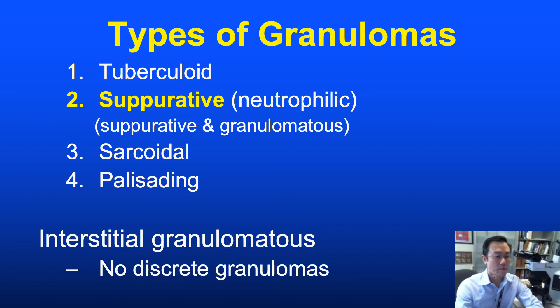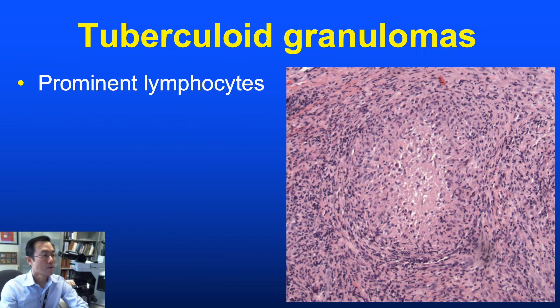A brief clarification: the term 'suppurative' refers to a neutrophilic infiltrate. A typical phrase used to describe these reactions is 'suppurative and granulomatous' or 'neutrophilic and granulomatous' — synonymous terms classified here as the suppurative granuloma. Let's start with the historical prototype: the tuberculoid granuloma, of course named for its characteristic presence in tuberculosis.